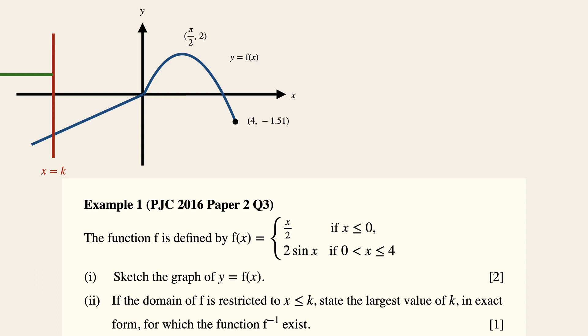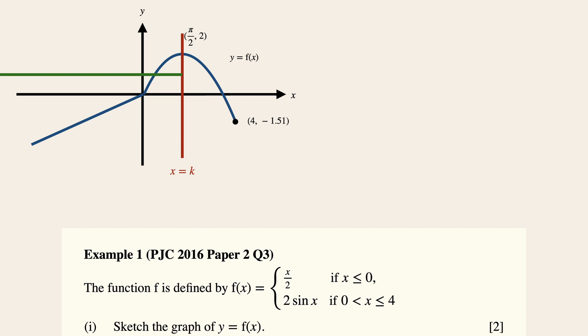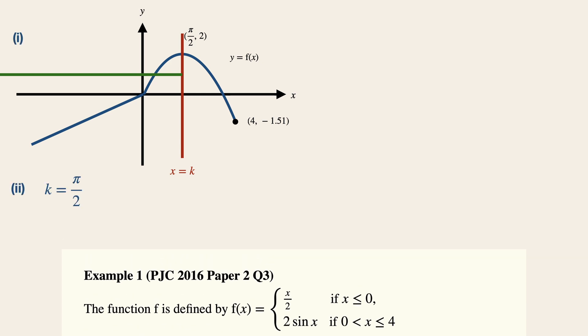Now you need not draw this in your working. It is just an imaginary line in your mind, which I'm trying to walk you through. So we can see that the largest value of k for the function to be one-to-one is pi over 2.